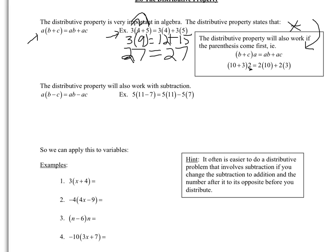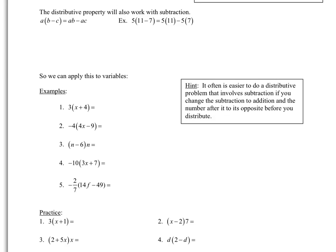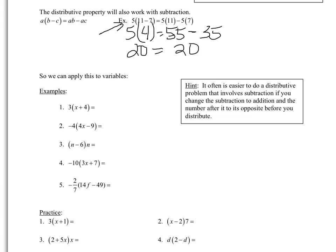Distributive property will also work if there's subtraction between the numbers inside the parentheses. Let's test it again with this example: if we did order of operations on the left-hand side, we'd do 11 minus 7 first, which is 4, and then 5 times 4 gives 20. Distributive property says you can get the exact same answer if you take that 5 and multiply it by each addend inside. So 5 times 11 is 55, and 5 times 7 is 35. Since there's a subtraction in between, we subtract them, which gives you that same answer of 20.